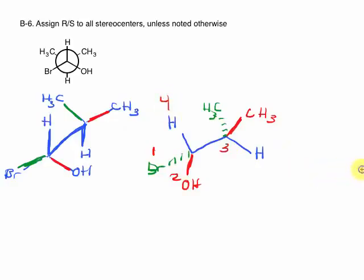Now the next step is to determine R and S now that we have our priorities. Unfortunately, H—our number four group—is not a dash, it's not in the back. If it was, we'd be able to quickly go in a clockwise or counterclockwise direction to determine if this is S. If it was a wedge it would be almost as easy—we'd just do the same thing but flip the result at the end. Here it's in the plane of the page, which can be tricky, but there is a way to make it easier.